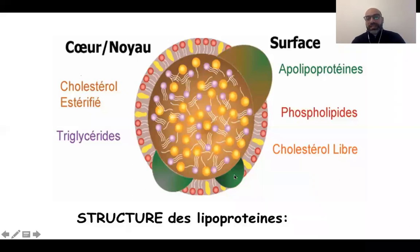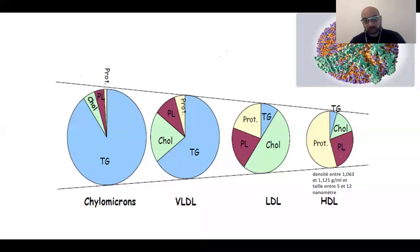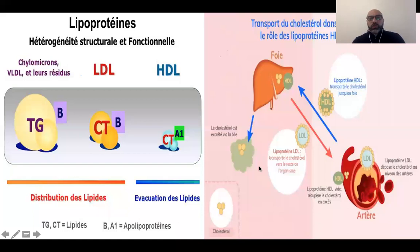Voici ces lipoprotéines : les chylomicrons, de grande taille mais faible densité ; les VLDL, riches en triglycérides ; et le LDL cholestérol et le HDL cholestérol, structures plus riches en cholestérol. Ces lipoprotéines vont transférer le cholestérol du foie vers la périphérie, et de la périphérie — les artères et les organes — vers le foie.